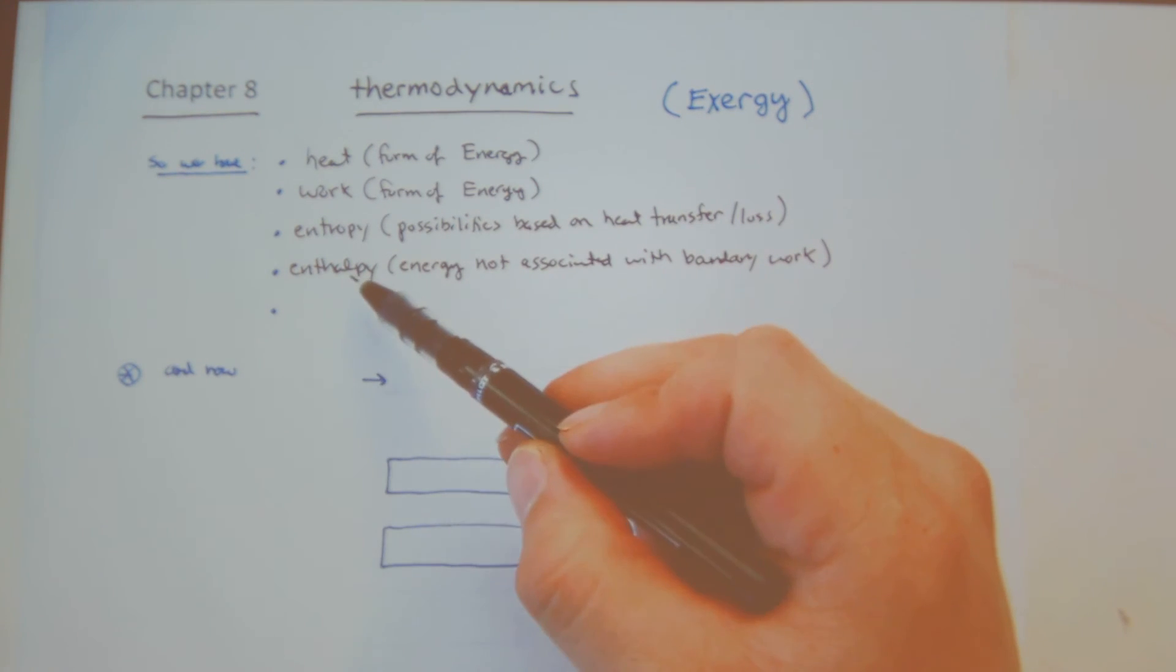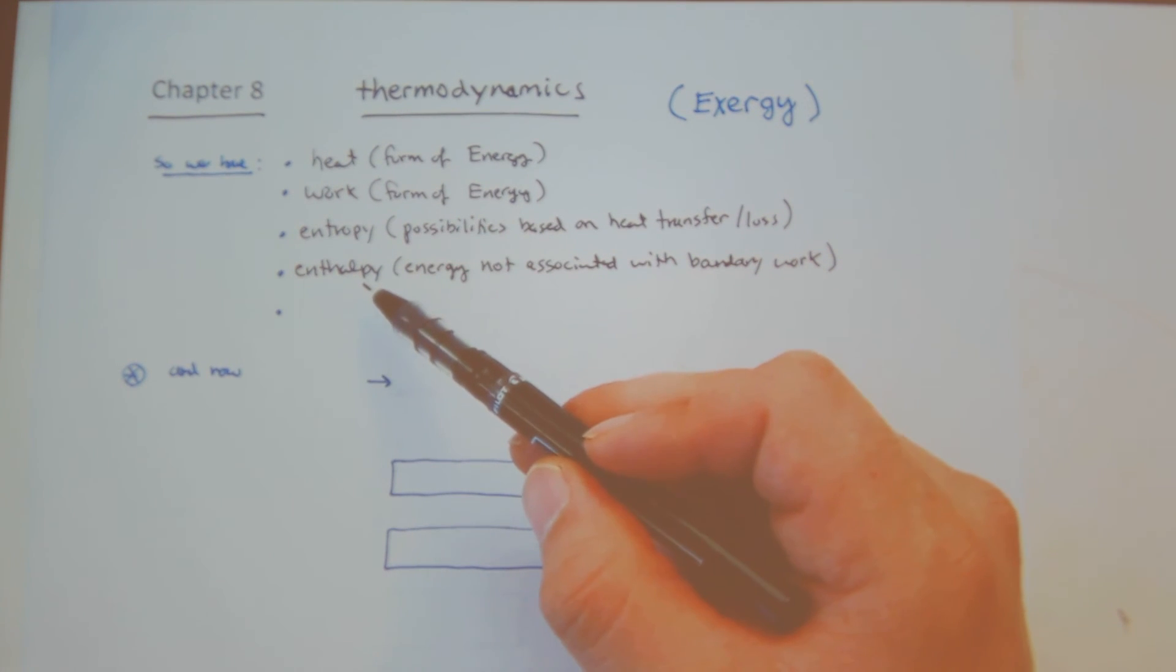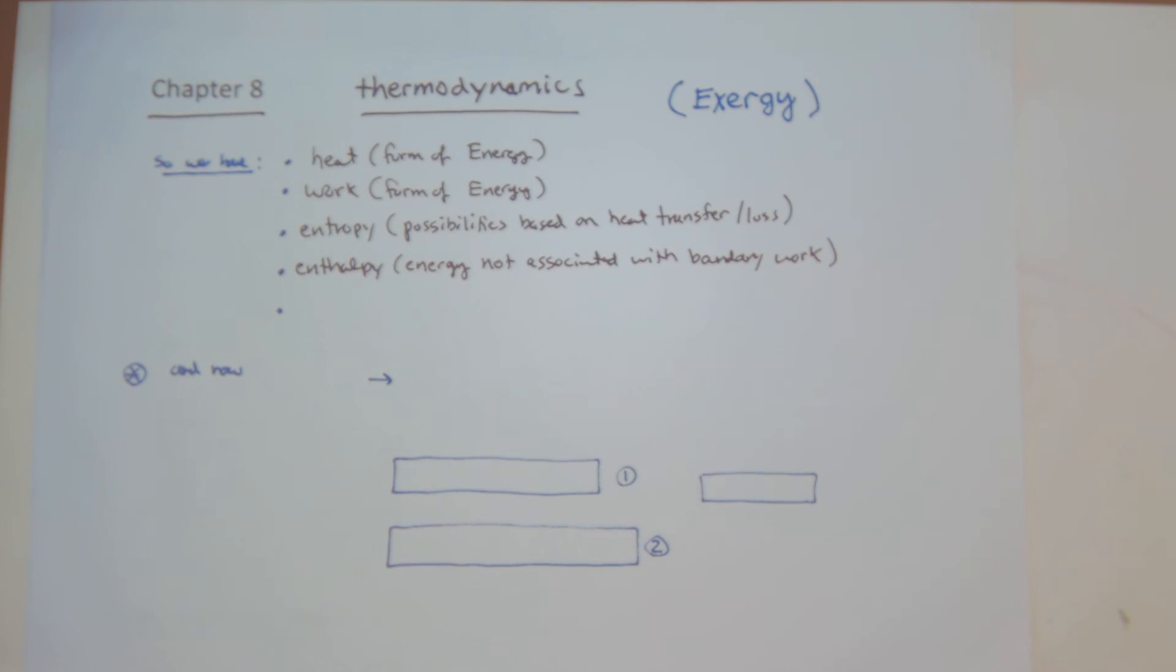We also had the enthalpy energy not associated with boundary. Internal energy is a format, we have the enthalpy H plus U plus PV, but the enthalpy turns out to be equivalent to the internal energy not associated with changes in boundary. It's more of the energy associated with thermal work, changes in temperature.